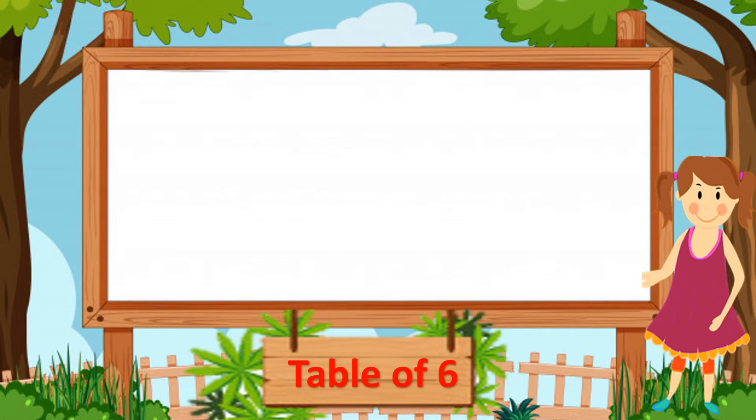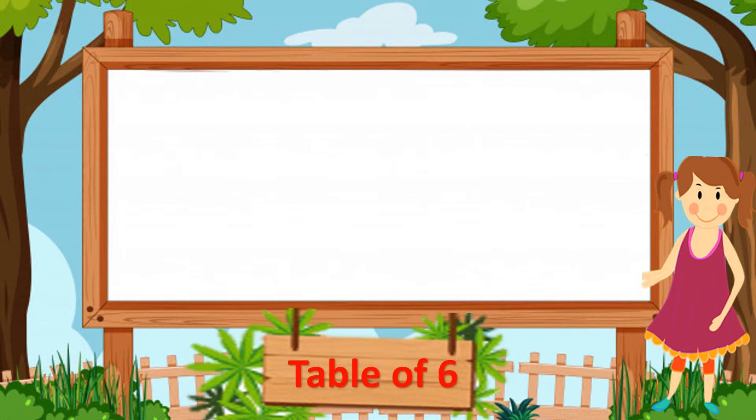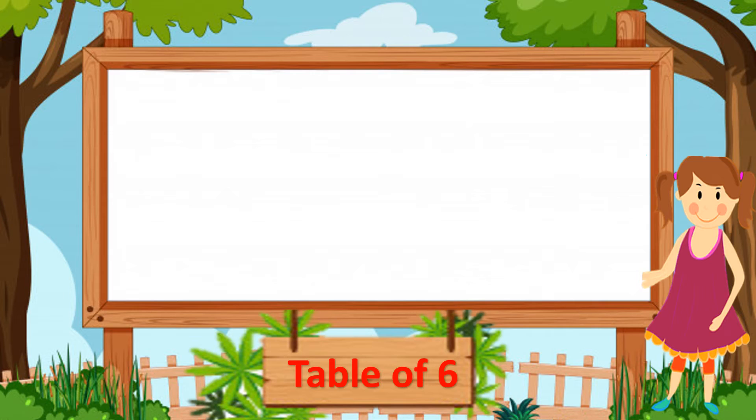So just now we saw the table of six, so let's revise it again. Okay. Six ones are six, six ones are six. Six twos are twelve, six twos are twelve. Six threes are eighteen, six threes are eighteen.